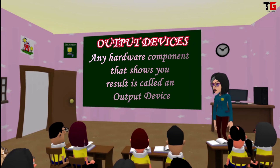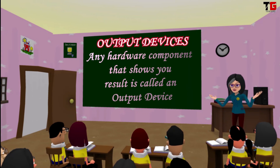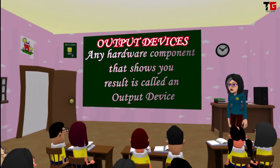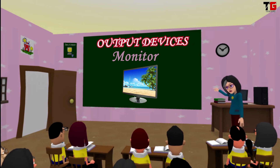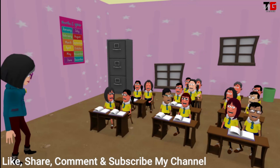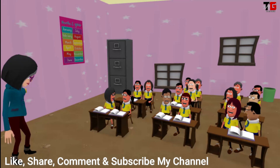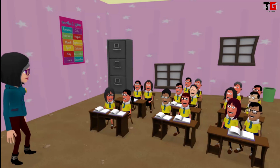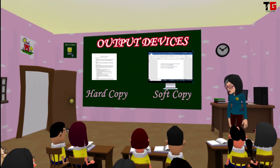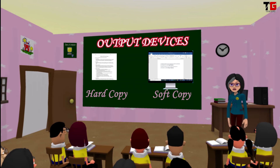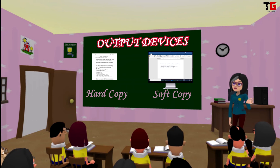Let's study about output devices. Any hardware component that shows you a result is called an output device. Monitor is the most popularly used output device — it looks like a television screen. We can watch movies, pictures, cartoons and text on the monitor screen. Next output device is printer. It is used to get the output on paper. Scanner converts hard copy into soft copy, but printer converts soft copy into hard copy. Soft copy is on the computer — you can see it but cannot touch it. Hard copy is on paper — you can touch it.